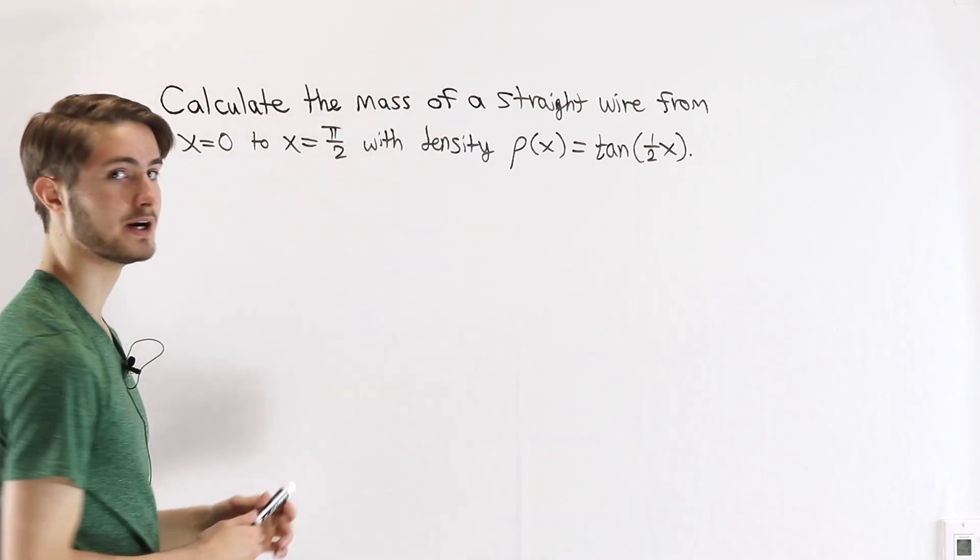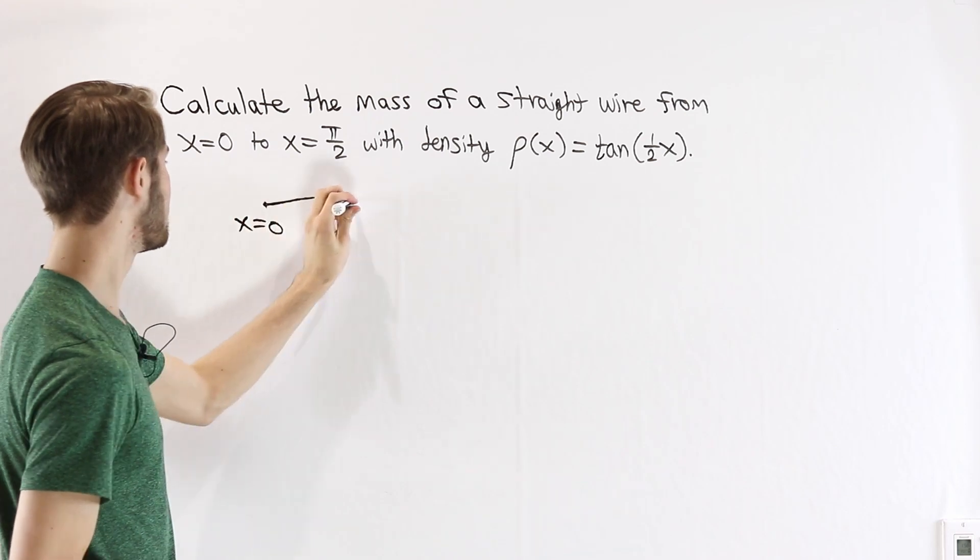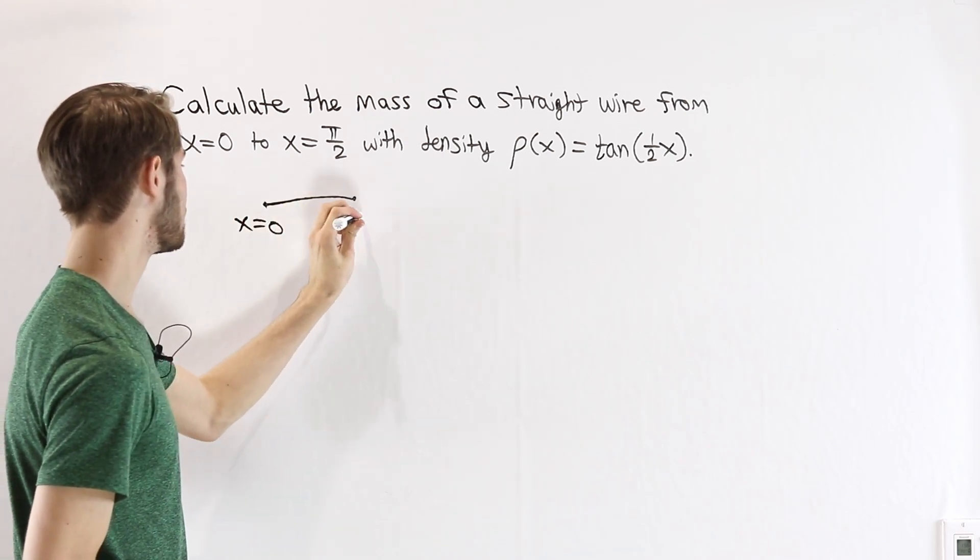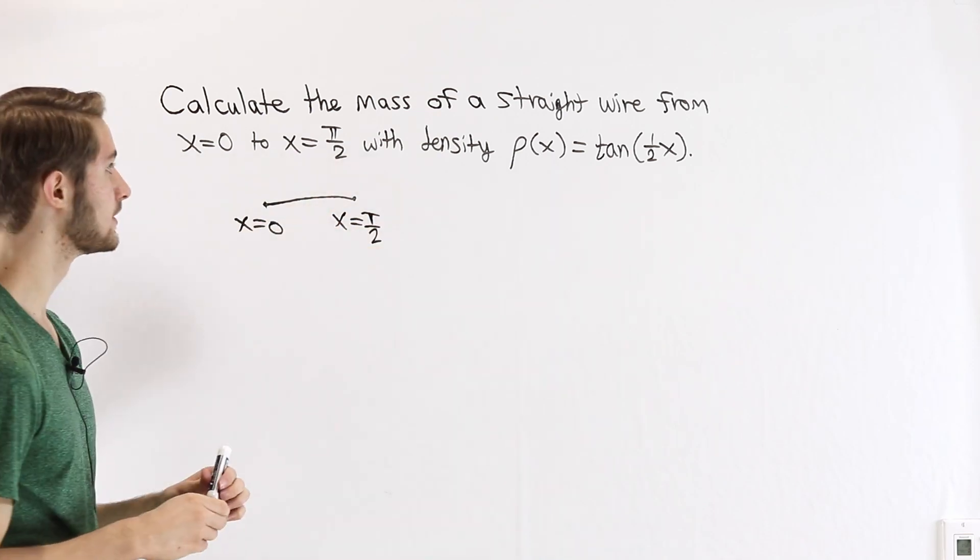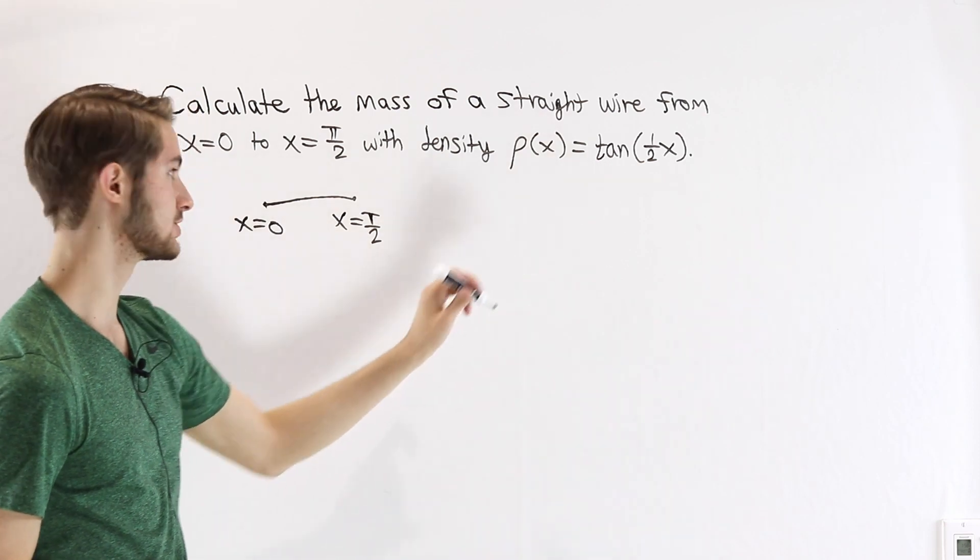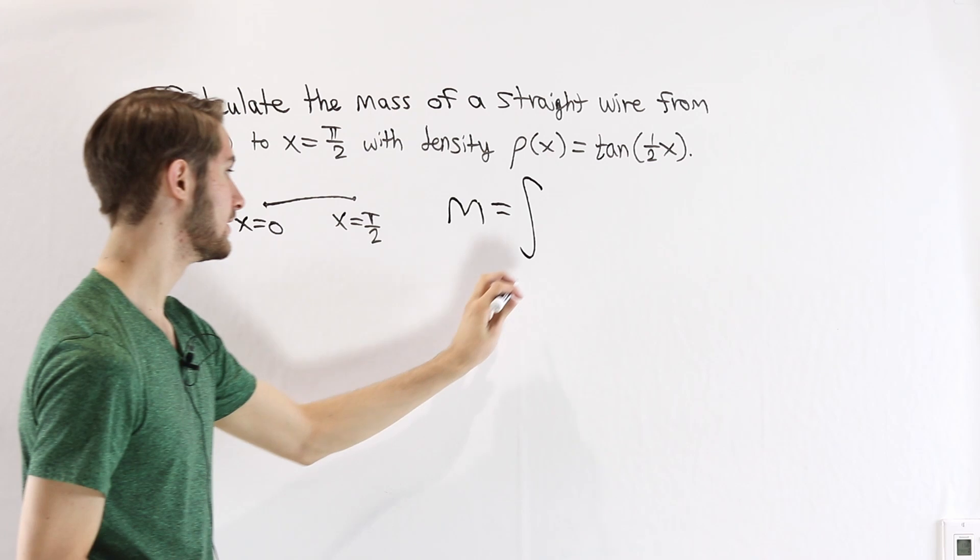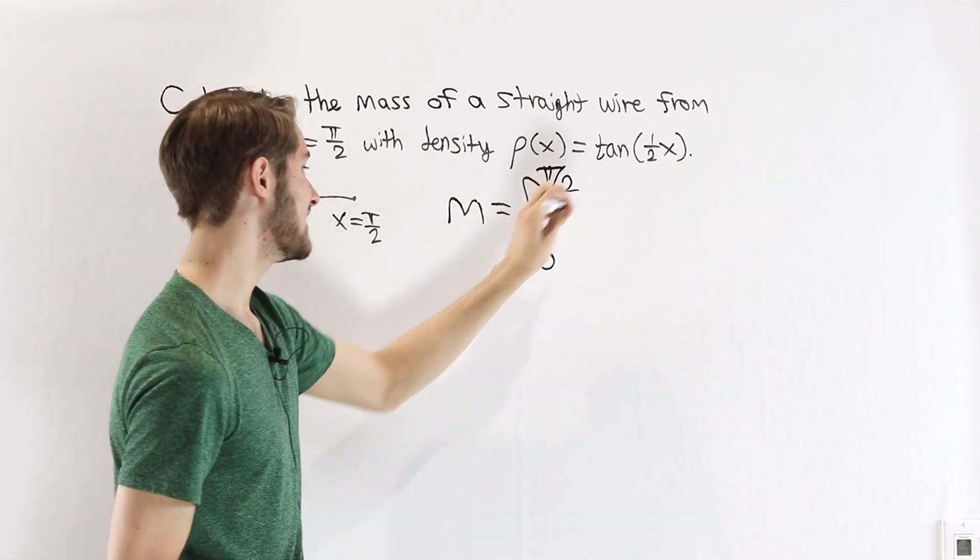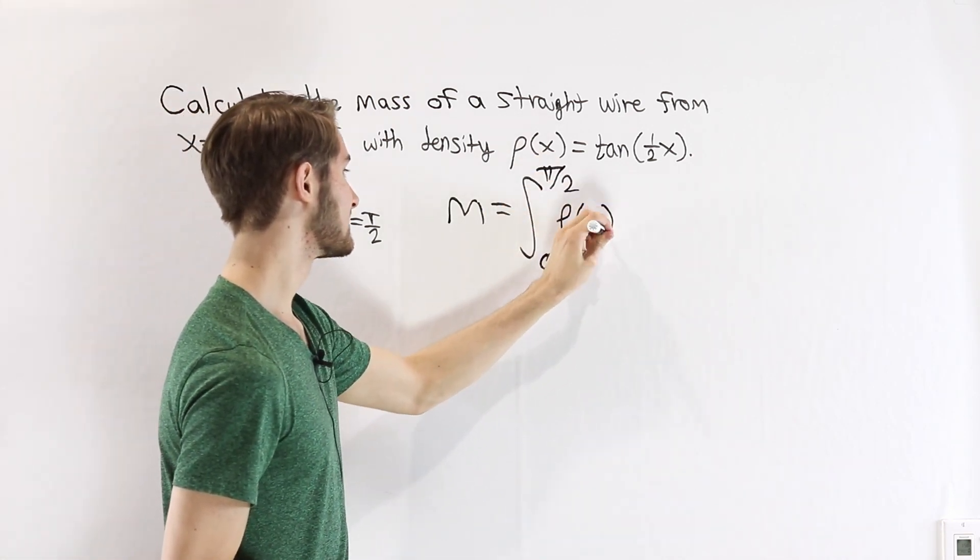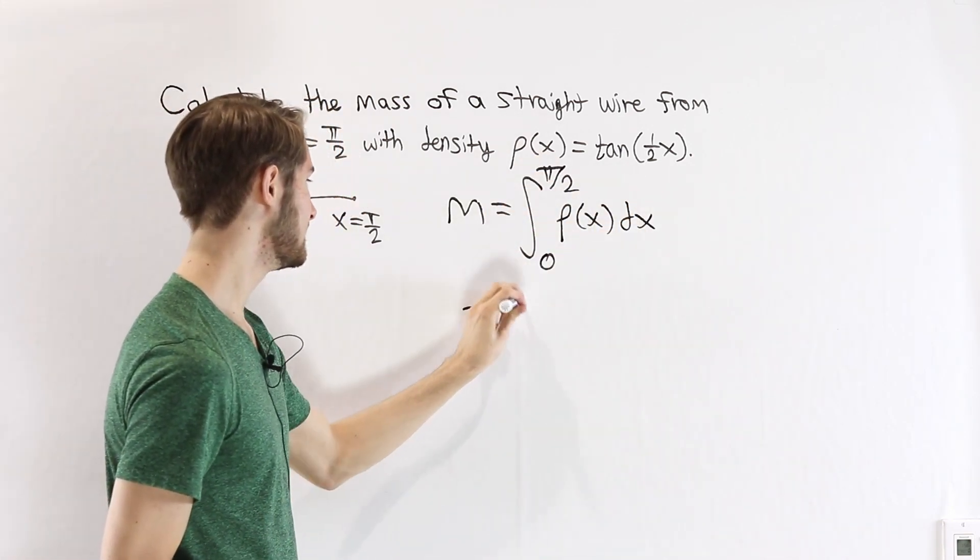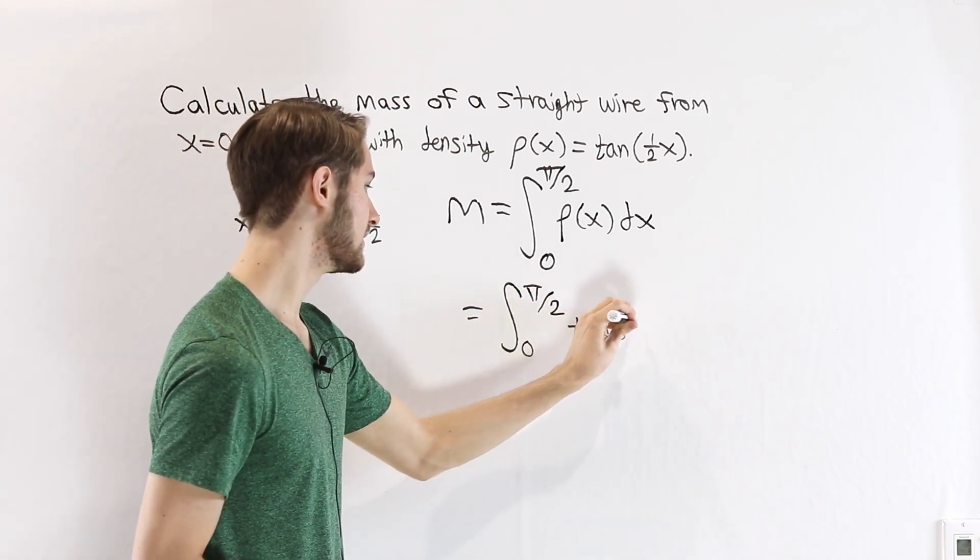When we're looking at the mass of a straight wire, the graph of that is going to be pretty easy. We have the point x equals 0, and then we have the point x equals π/2, and this is just a straight line connecting the two points. We know that if we have a particular density function, the mass is going to be the integral over that entire wire of the density. So we have the integral from x equals 0 to x equals π/2 of ρ(x) dx. And in this case, that density function is the tangent of 1/2 x.